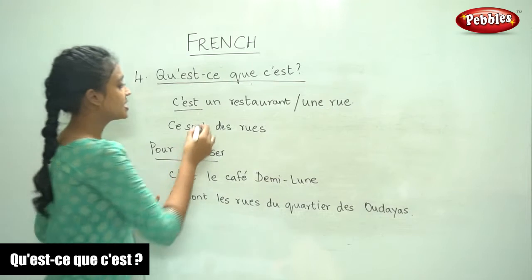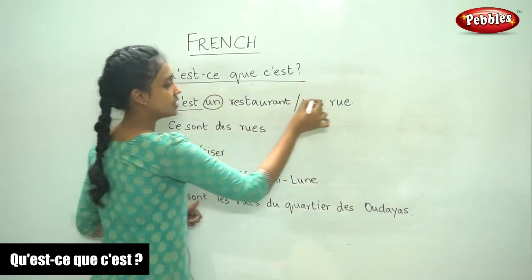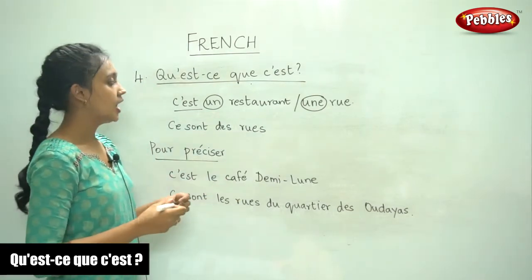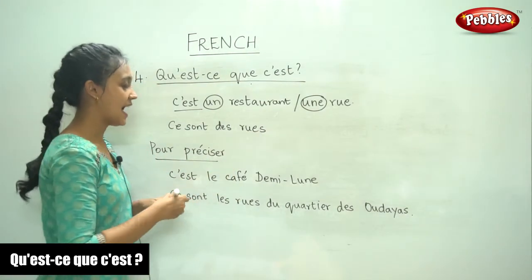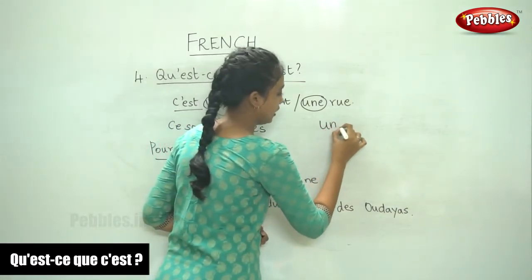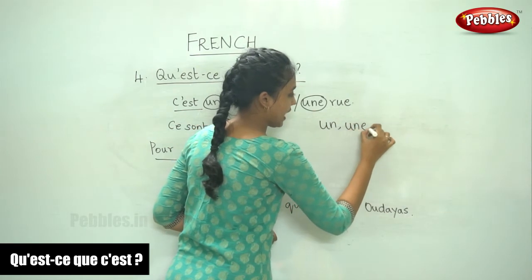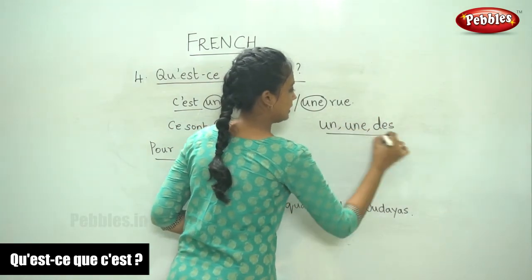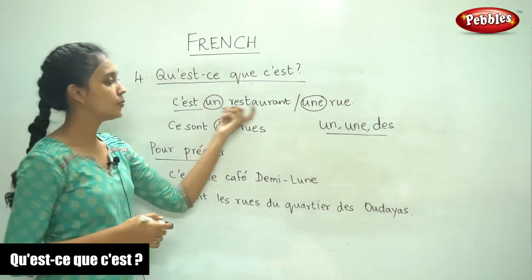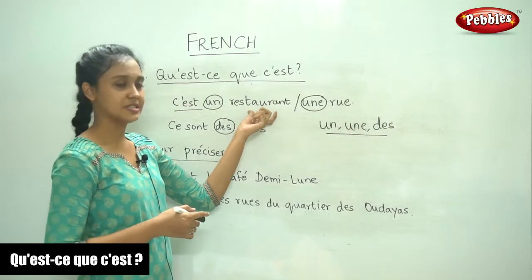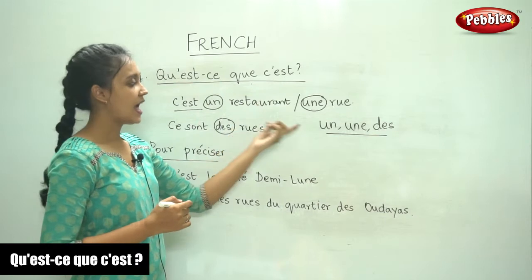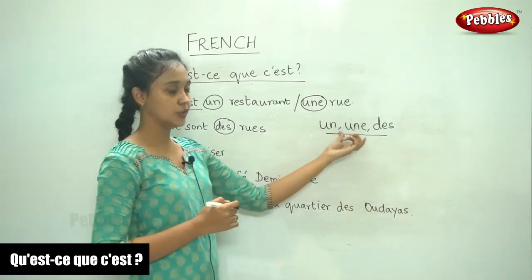You must have noticed these words — these are the articles: un, une, and des. These are the indefinite articles. It means it is not pointing out something very precise. It is a restaurant — 'C'est un restaurant.' When do we use un, une, and des? Un comes before a noun that is masculine, une comes before a noun that is feminine.